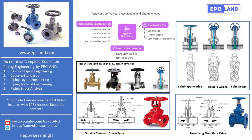Now we come to the third classification: types of stem movement. This classification is about how the valve stem moves when the valve is operated. The rising stem, or OS&Y type — which stands for outside stem and yoke — has the stem moving up when the valve is opened and down when closed. The threaded part of the stem is outside the fluid flow, which prevents it from getting corroded or damaged. You can easily know whether the valve is open or closed just by looking at the position of the stem.